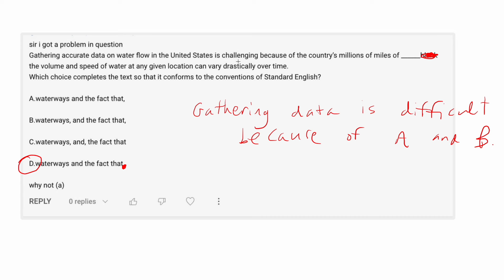So in this case, you know, what I'm calling A is the country's millions of millions of miles of waterways. And what I'm calling B is the fact that the volume and speed of water can vary drastically over time. And so why not A?